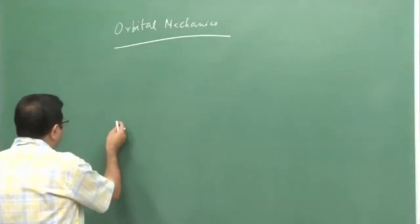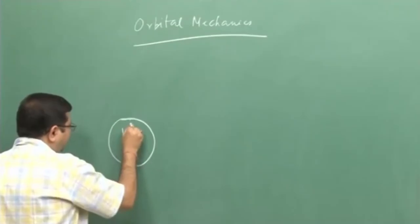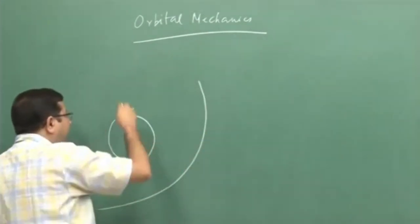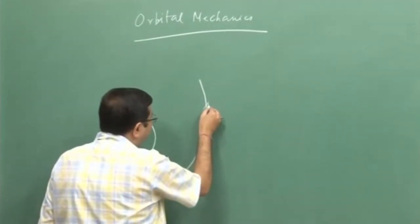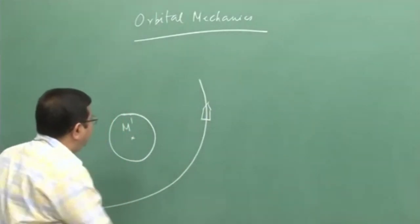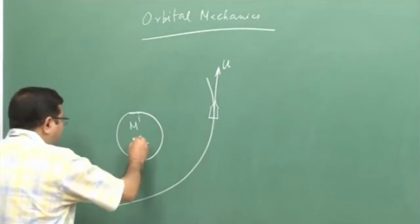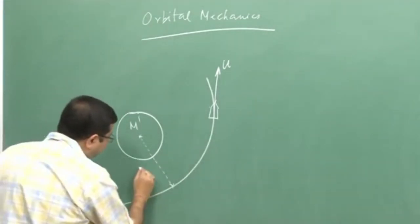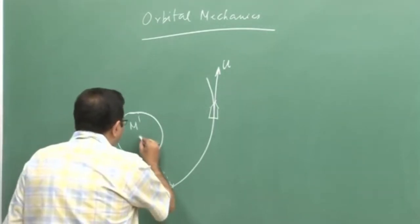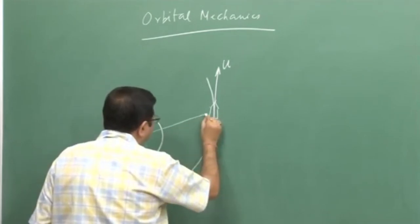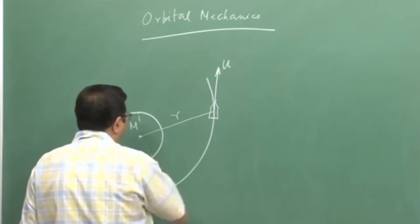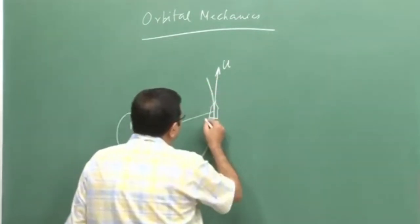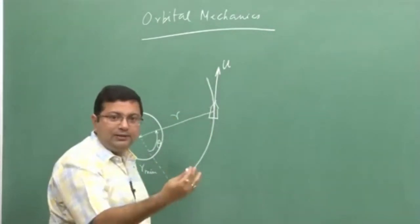Let me draw the problem statement. We have a heavenly body, quite massive, with mass m dash, and an artificial body — a satellite or something — is moving around it in a predetermined path. Let us say this is the satellite, moving with a velocity u. The minimum distance of the satellite path from the center of the heavenly body is r min.